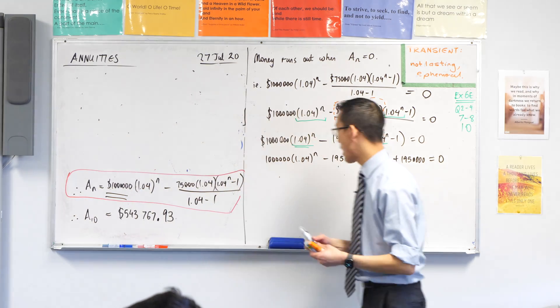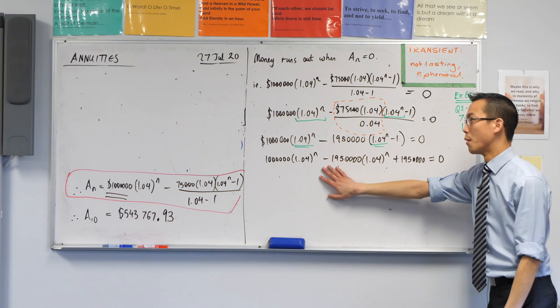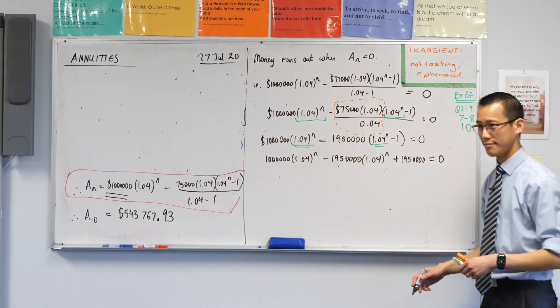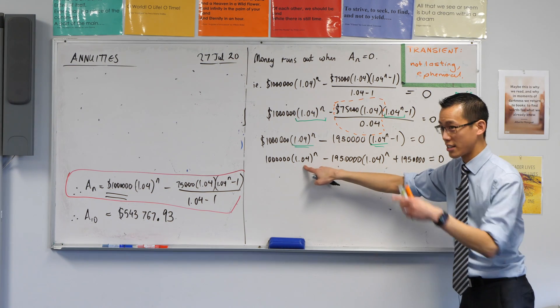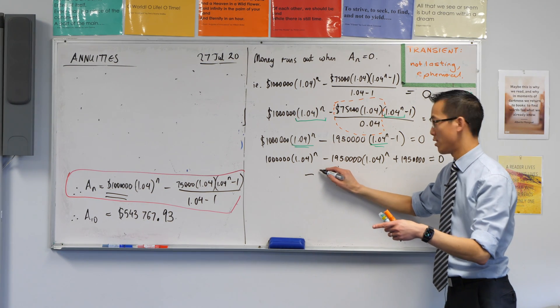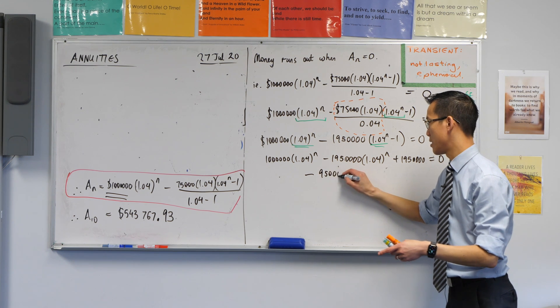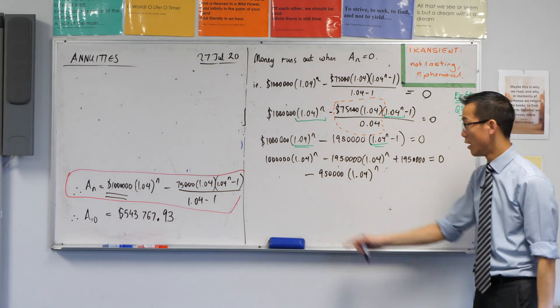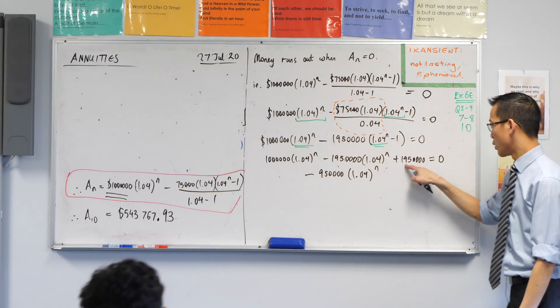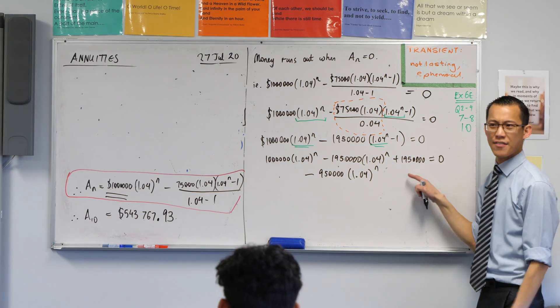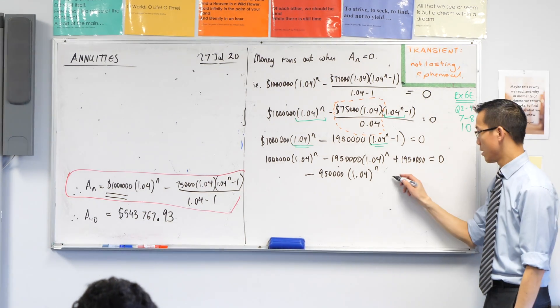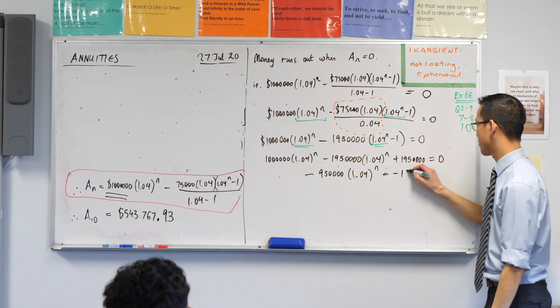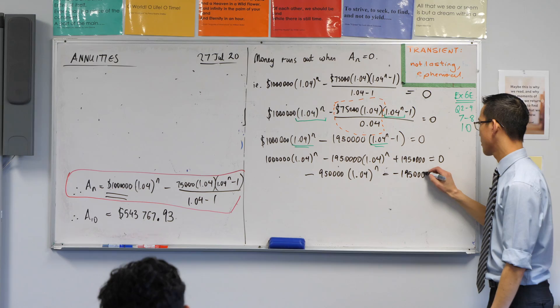By 1.04 to the power of n, there's a million over here and there's 1.95 million over here. So how many do I end up with? Yeah, it's going to be a negative, right? It's going to be negative 950,000, I think. 1.04 to the power of n, go ahead and check it if you want, a million take away that. I've also got this guy, but that doesn't have anything to do with n, so I'm going to kick it over to the other side. Is that okay? So I will subtract 1.95 million from both sides, which gives me this.